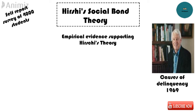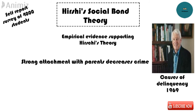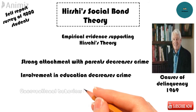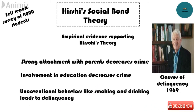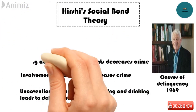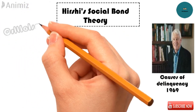Youth who were strongly attached to their parents were less likely to commit criminal acts. Youth involved in conventional activities such as homework were less likely to engage in criminal behavior. Youth involved in unconventional behavior such as smoking and drinking were more delinquency-prone. Youth who established distant relationships with people were also more delinquency-prone.